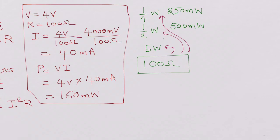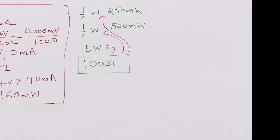To understand this we go back to resistance and resistivity. Resistance R is written as rho times L over A, where L is the length and A is the cross-sectional area.